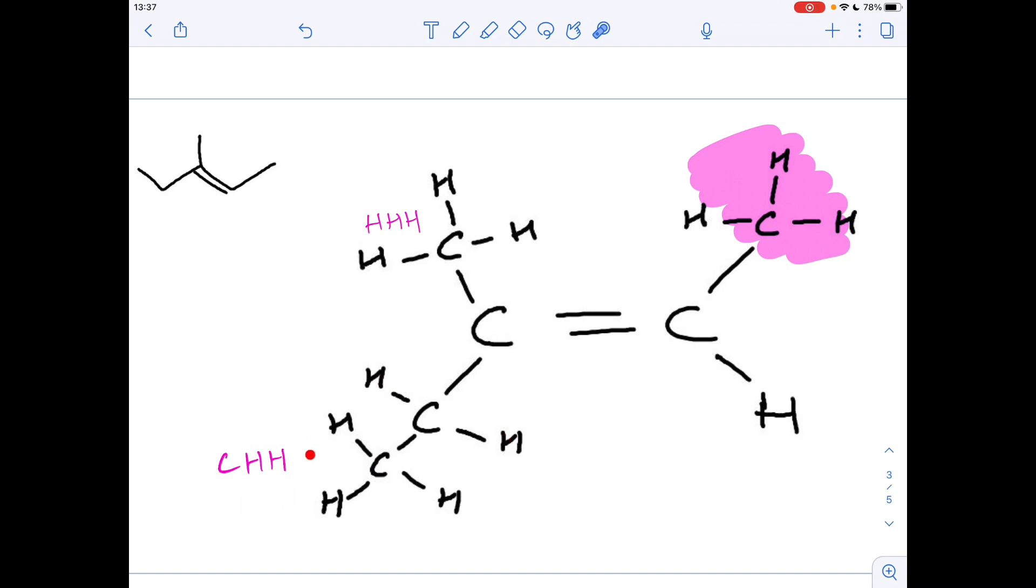So that one wins because it's got that carbon in there, whereas that's just hydrogens. So the priority group is this one. So they're on diagonally opposite sides, so this is the E isomer.